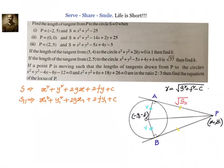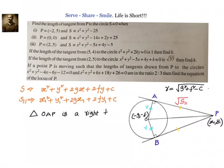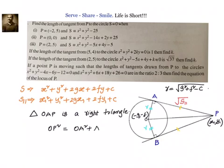First, let us write down that triangle OAP is a right-angled triangle. If it is a right triangle, then we know that we can apply the Pythagoras theorem. So we can write down: OP² = OA² + AP². Now, we can find out the distance OP because we know the coordinates of O and P. What we need to find out is AP.